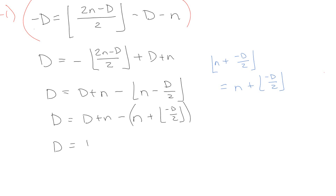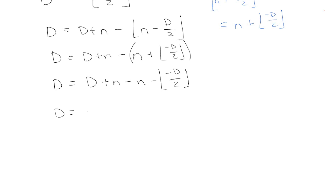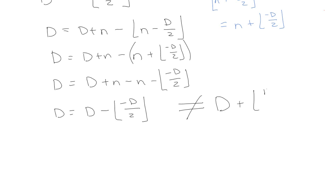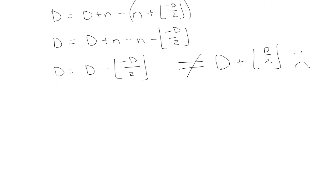Now, resist the urge to distribute that negative sign through the floor function. This is not equal to D plus floor of D over 2 — that is not mathematically valid. It's easy to do something wrong if you're not used to working with floor and ceiling functions. Let me show you with an example why you can't just distribute the negative.